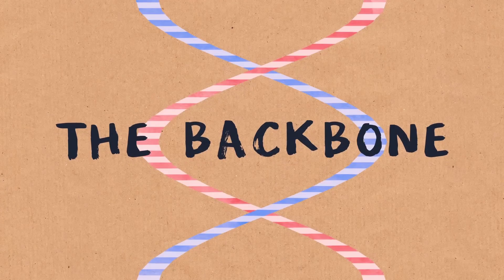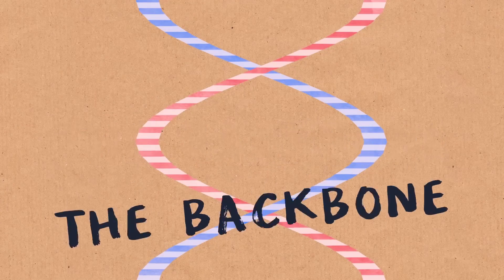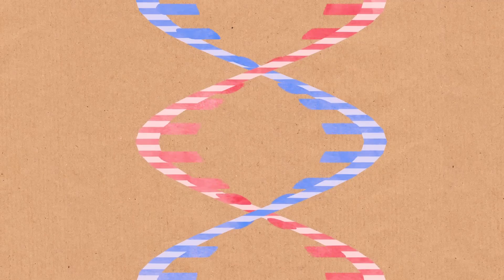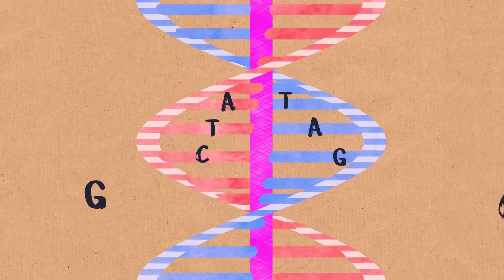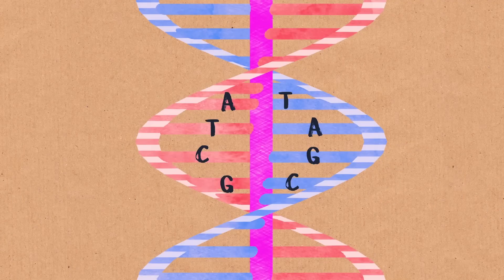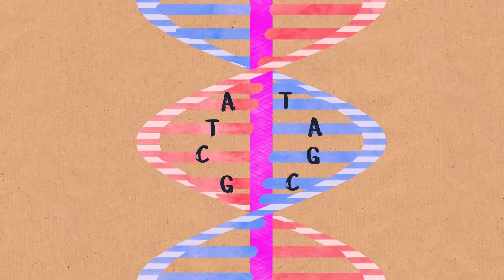To each sugar phosphate group is attached a nitrogenous base, just call it a base. The bases in the two backbones pair A with T and C with G, and they are held together with hydrogen bonds.